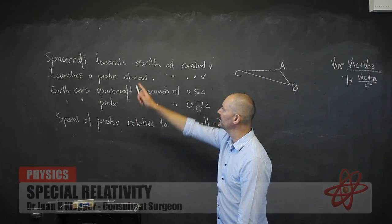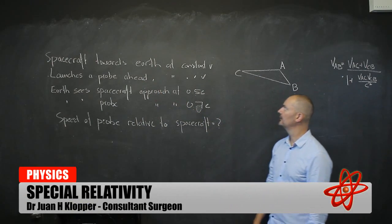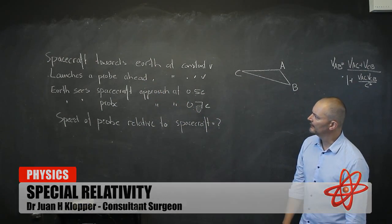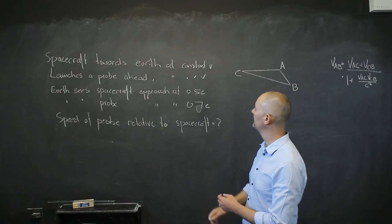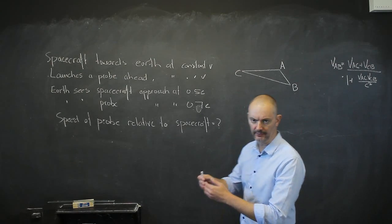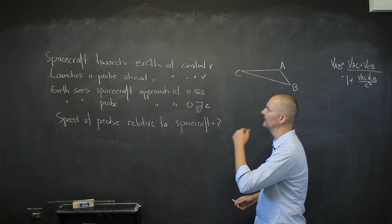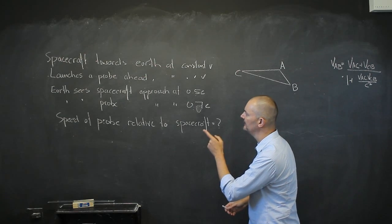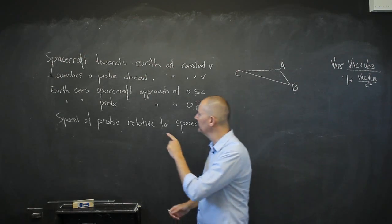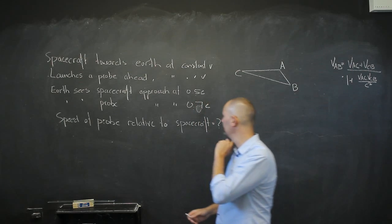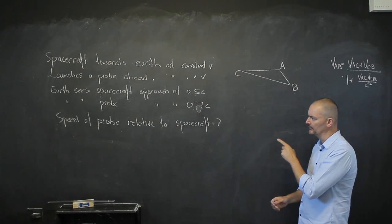In this problem we have a spacecraft travelling towards Earth at a constant velocity, and it launches a probe ahead of itself, also at constant velocity, which will obviously be faster than the spacecraft coming towards us. Earth sees the spacecraft approach at half c and the probe at 0.7c. What is the speed of the probe relative to the spacecraft?